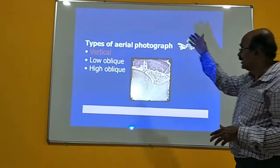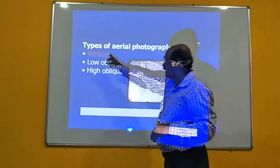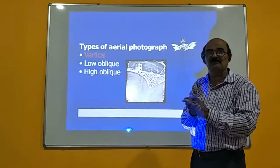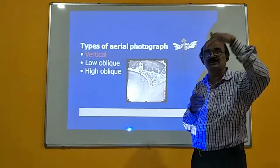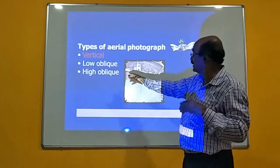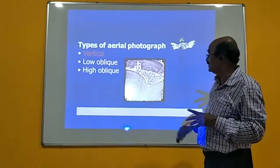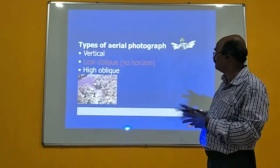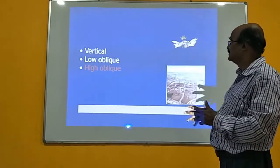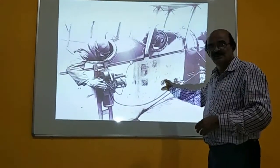Types of aerial photographs depend on the inclination of the optic axis of the camera. We have low oblique, high oblique, and vertical aerial photographs. In vertical photographs, the optic axis is kept vertical; in oblique photographs it is inclined. In high oblique, the inclination is sufficient to see the horizon; in low oblique, the horizon is not visible. There is also the aeroblique type, giving vertical, oblique, and aeroblique categories.